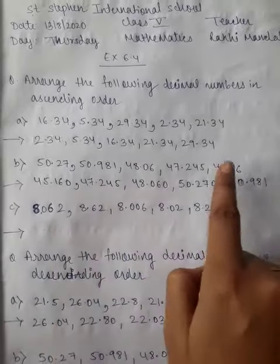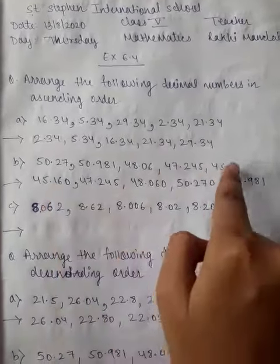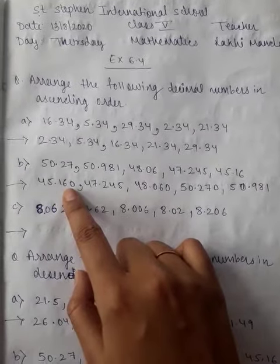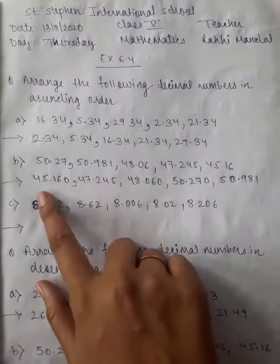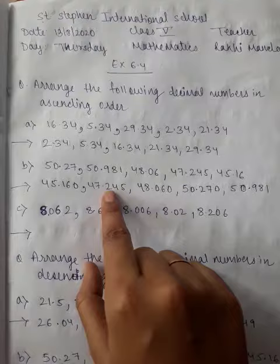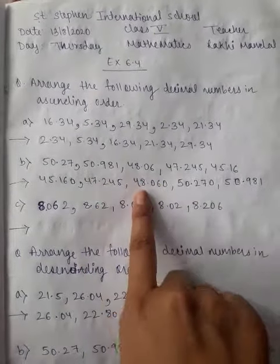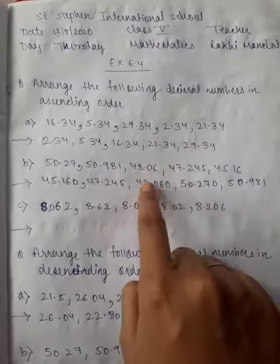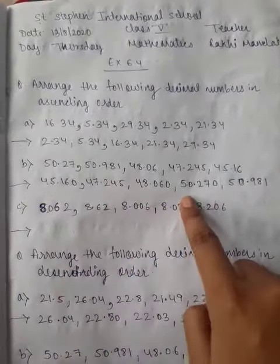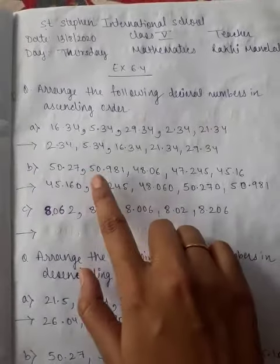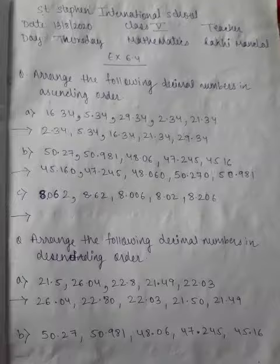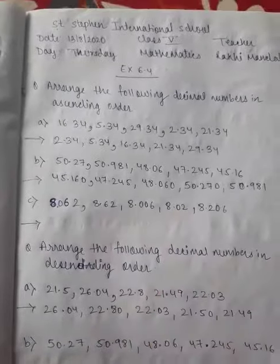So first is 45.16 with three digits. We will put a zero here. So we have 45.160, then 47.245, then 48.060 - put a zero here, then 50.270, and then 50.981. In the same way, you have to do this question.